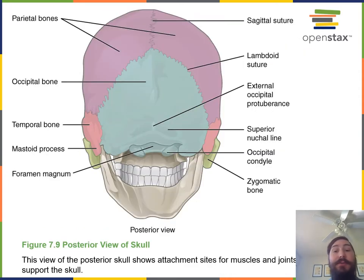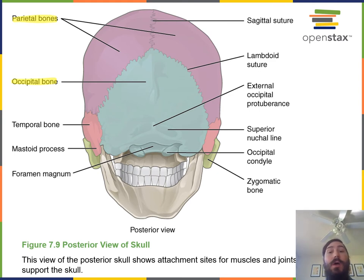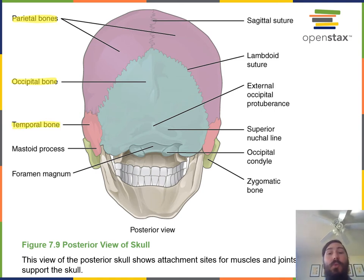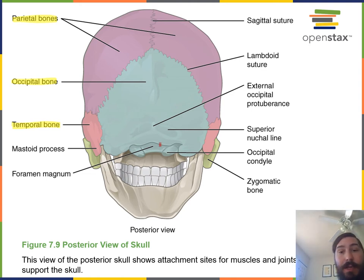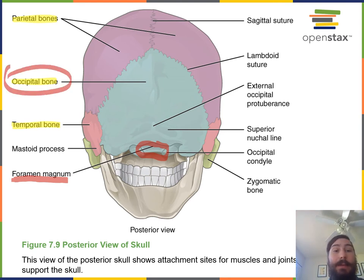In this posterior view of the skull, the occipital bone forms the posterior wall, the parietal bones form the superior and lateral walls, and the temporal bones are located on the inferior lateral walls of the cranium. A major feature here is the large opening called the foramen magnum — part of the occipital bone. Magnum means really large and foramen means an opening or hole through the bone. This is the large opening where the brain connects to the spinal cord.